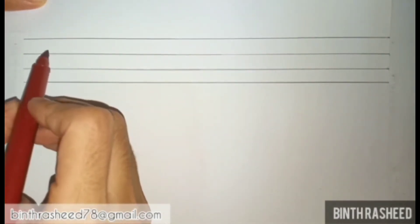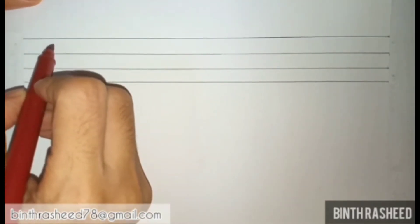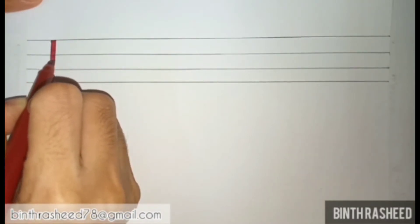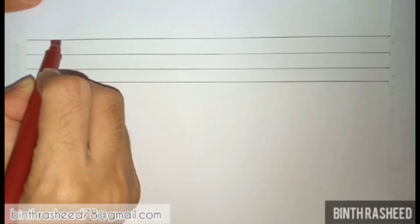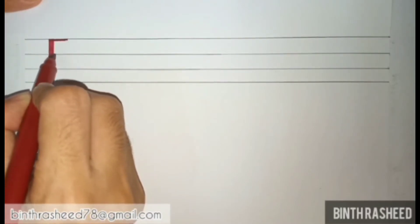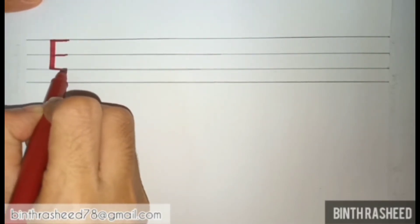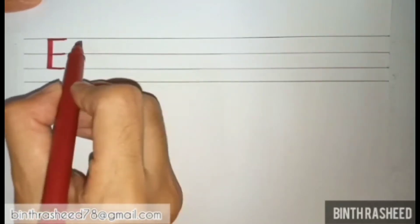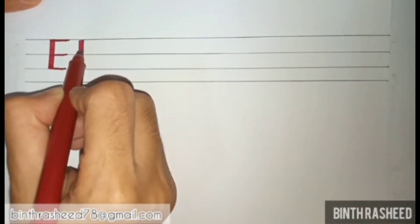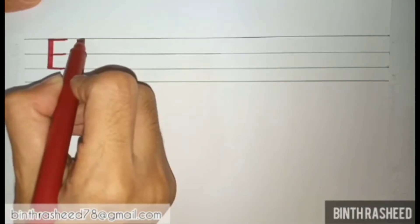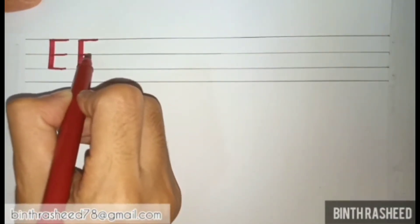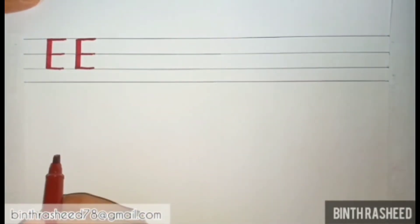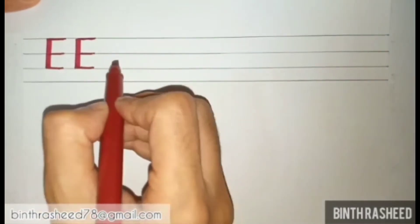To write capital E, you start from the top line and draw a standing line downwards, then a sleeping line on the top, one in the middle, and another sleeping line at the bottom. Let's try it once more: a standing line downwards, first sleeping line, second sleeping line, and third sleeping line — that's how we get our capital E.